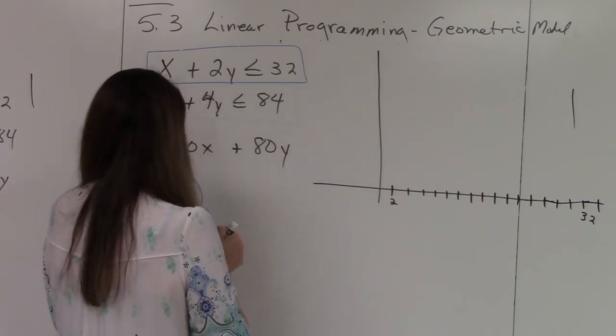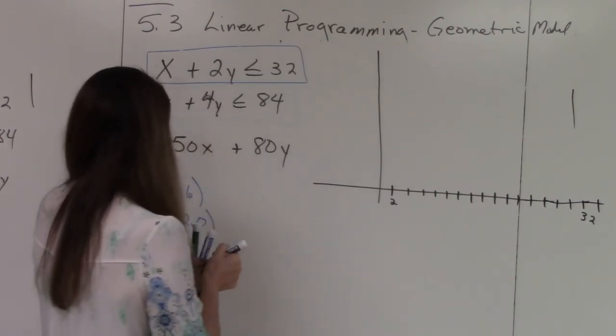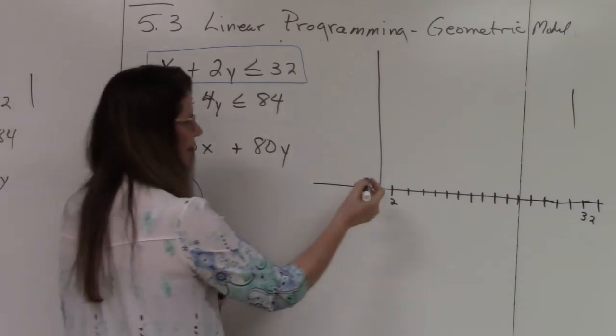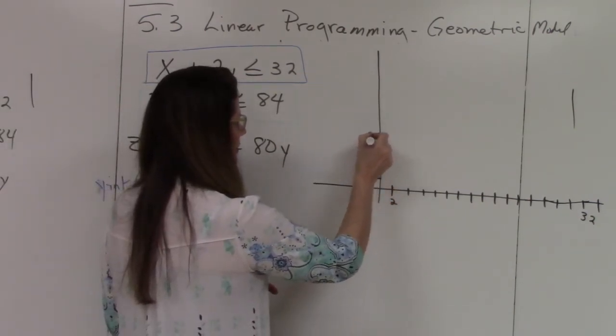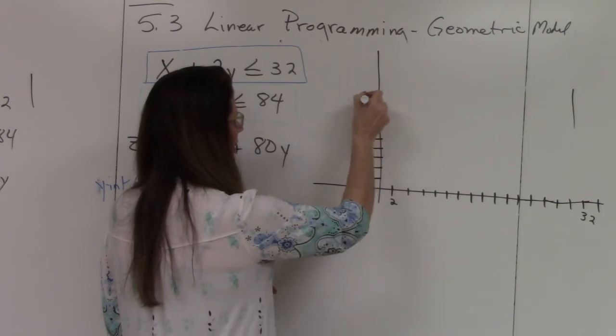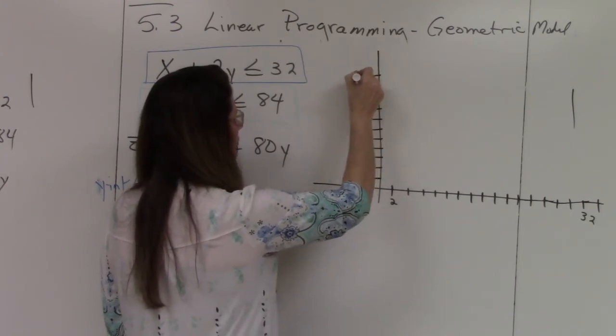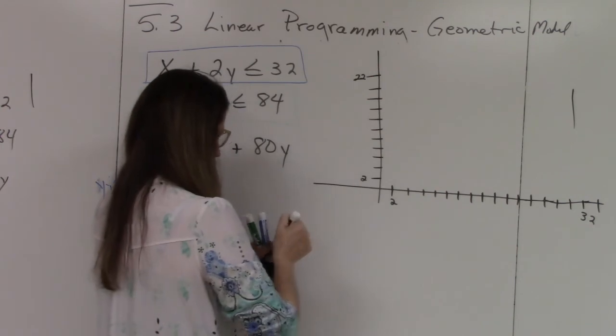And then for the Y, my highest value is 21, and I'm going to go by 2's again. So 2, 4, 6, 8, 10, 12, 14, 16, 18, 20, 22. So 21 is going to be right in between.